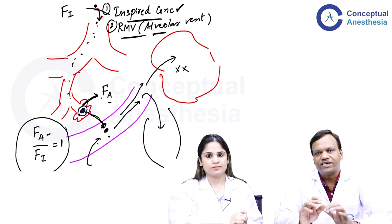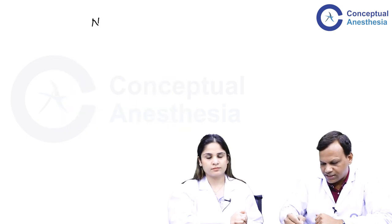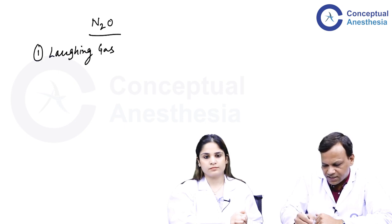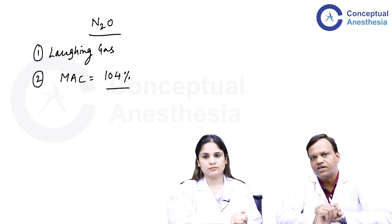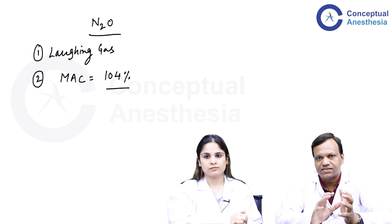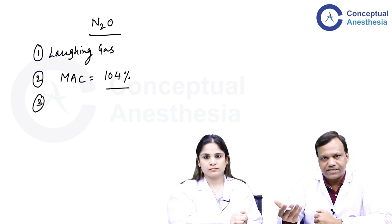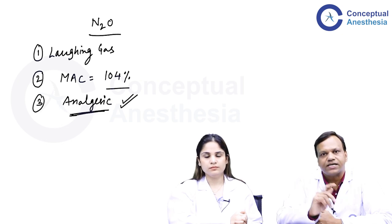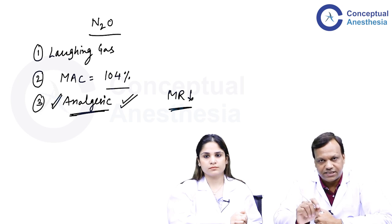Now we will discuss drugs individually, starting with nitrous oxide — also known as laughing gas. Its MAC is 104%, meaning it is not a complete anesthetic agent. Even giving 70% — the highest feasible concentration — cannot produce anesthesia. So it is given along with other drugs. Nitrous oxide is not a good anesthetic agent but is a very good analgesic agent. It is also a poor muscle relaxant, but its main advantage is excellent analgesia.